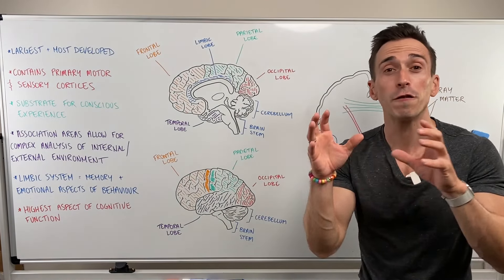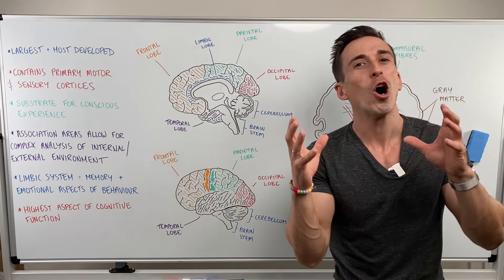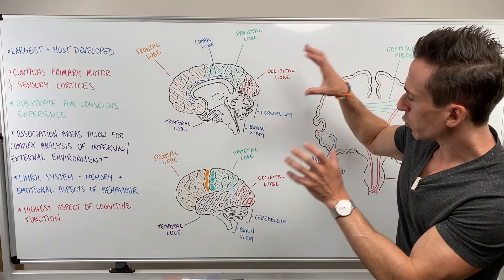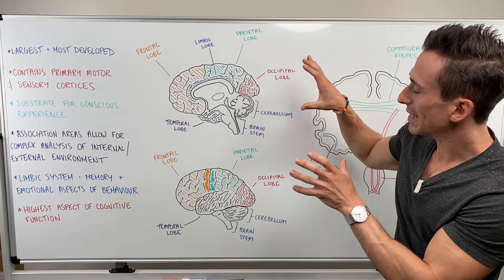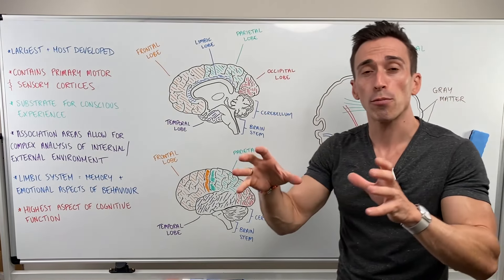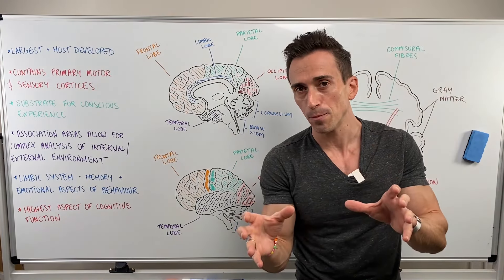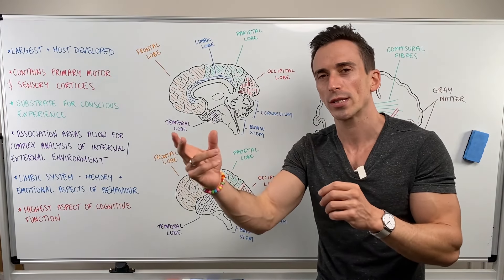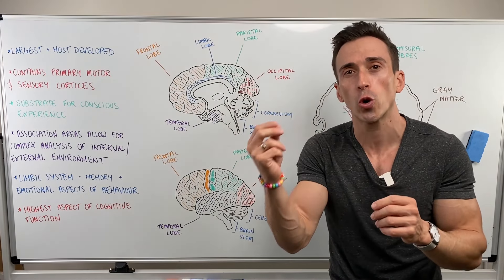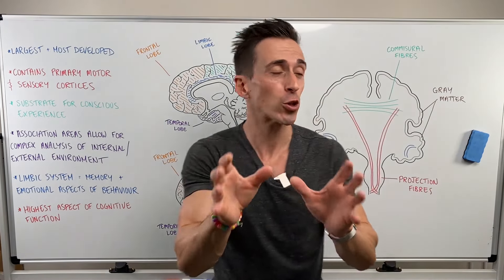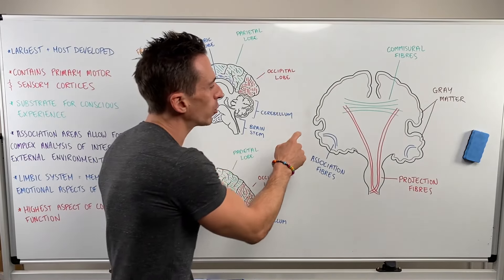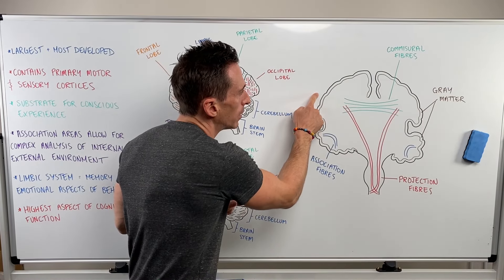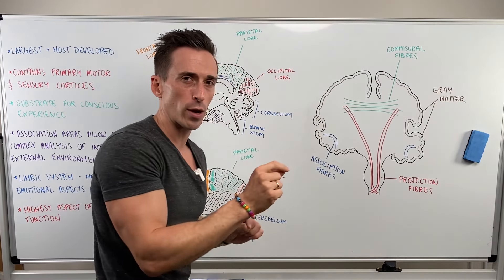Let's take a look at some of the functions of the cerebrum. First, the cerebral hemispheres contain the primary motor and sensory cortices. When I say cortices, I'm referring to the cortex, and the cortex is simply the outer one to five millimeters of the cerebrum.